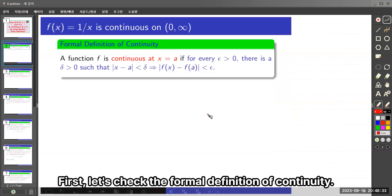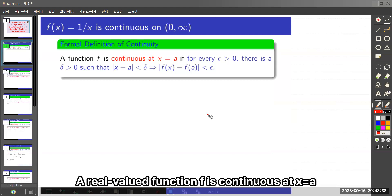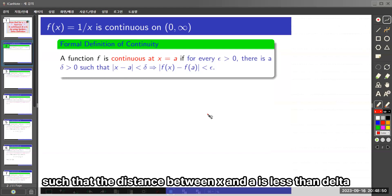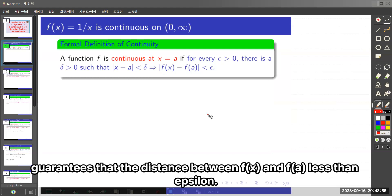First, let's check the formal definition of continuity. A real-valued function f is continuous at x = a if for every positive epsilon there exists a positive delta such that the distance between x and a is less than delta guarantees that the distance between f(x) and f(a) is less than epsilon.